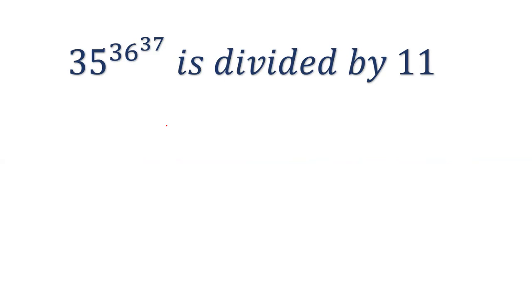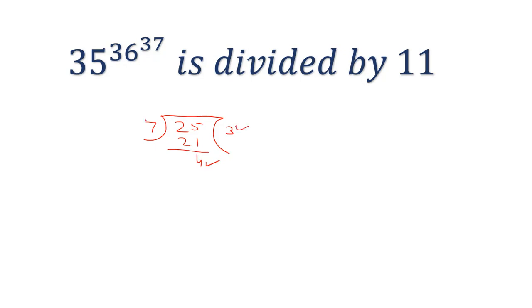A remainder is what we get when we divide one number by another. For example, 7 divided by 3 is 21 with remainder 4. The terms involved are: remainder, quotient, divisor, and dividend.